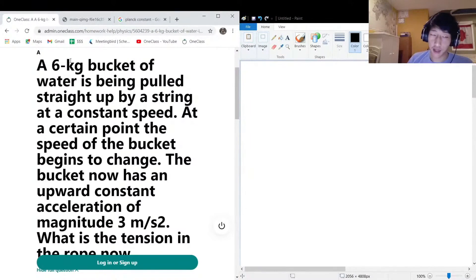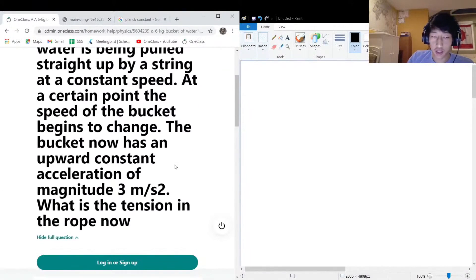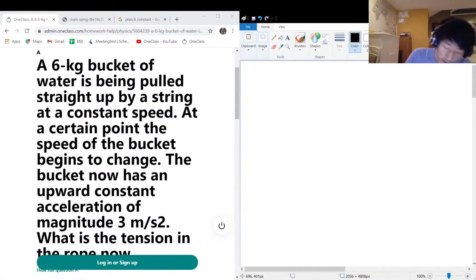The bucket now has an upward constant acceleration of 3 m/s². What is the tension in the rope now? Okay, so let's extract the numbers of interest. We have a mass of 6 kilograms—that's a lot of water. It starts at constant speed, and then at a certain point, the acceleration becomes 3 m/s². So acceleration upward, a_up, becomes 3 m/s².